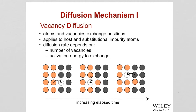Increasing temperature affects vacancy diffusion because vacancies must be present in the structure, and the atom needs sufficient energy to move from its original spot to the vacancy site. Atomic motion and vacancy motion happen in opposite directions — as the copper atom moves into the vacancy site, the vacancy moves back toward the copper.